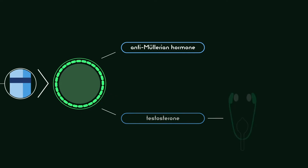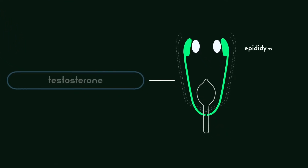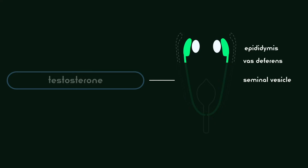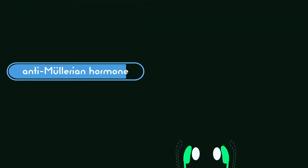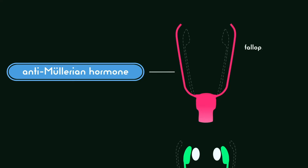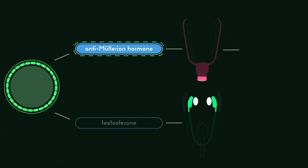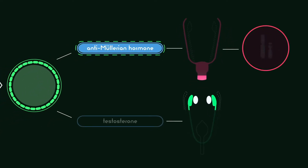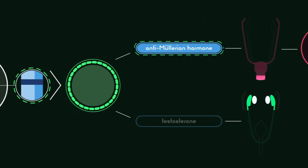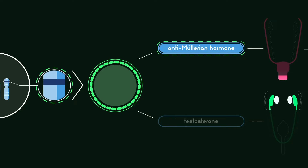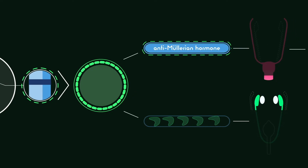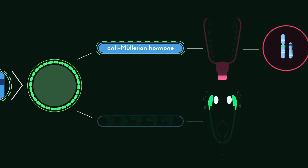Because the fetus cannot respond to testosterone, the Müllerian structure — which would have formed the fallopian tubes, uterus, cervix, and upper part of the vagina — disintegrates. But with no response to testosterone, the fetus does not masculinize, and the baby is born with female external genitalia. Despite the active SRY gene which differentiates the gonads into testes, the androgens are unable to bind to androgen receptors for male sex development, and the infant is born with a female phenotype.